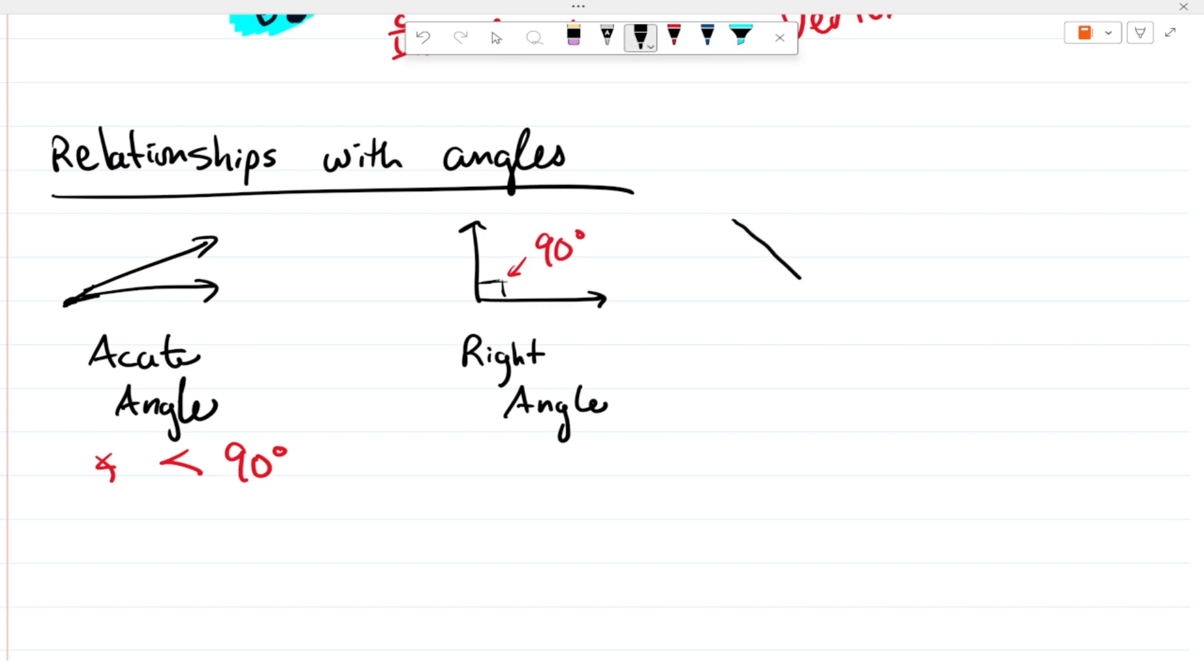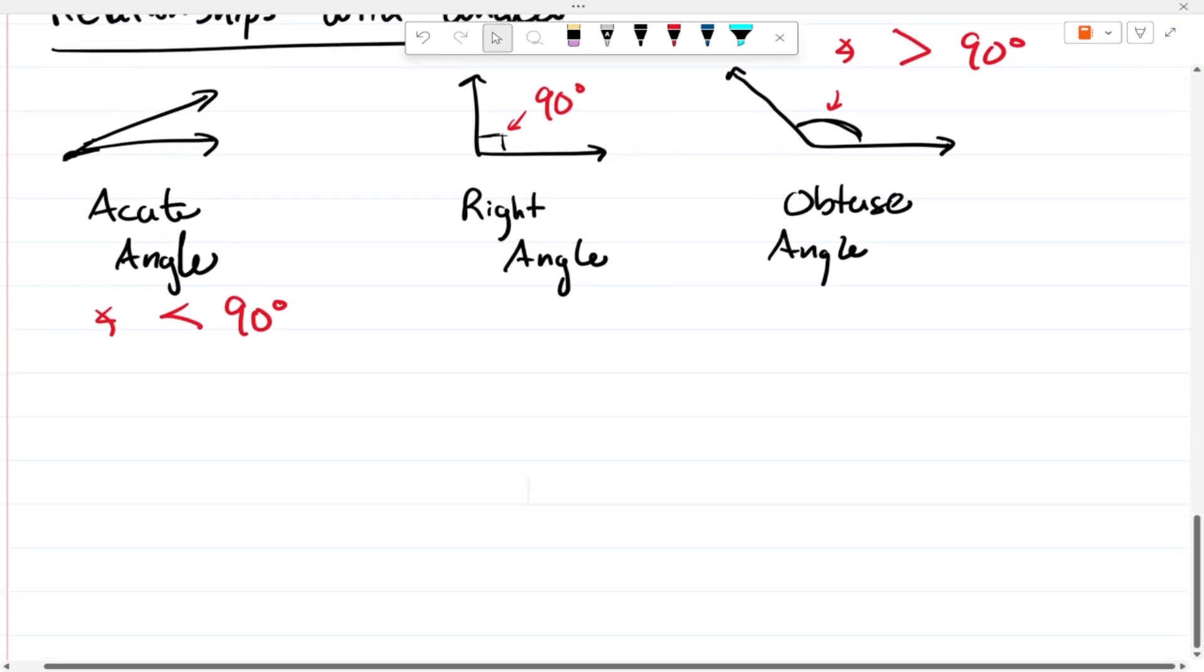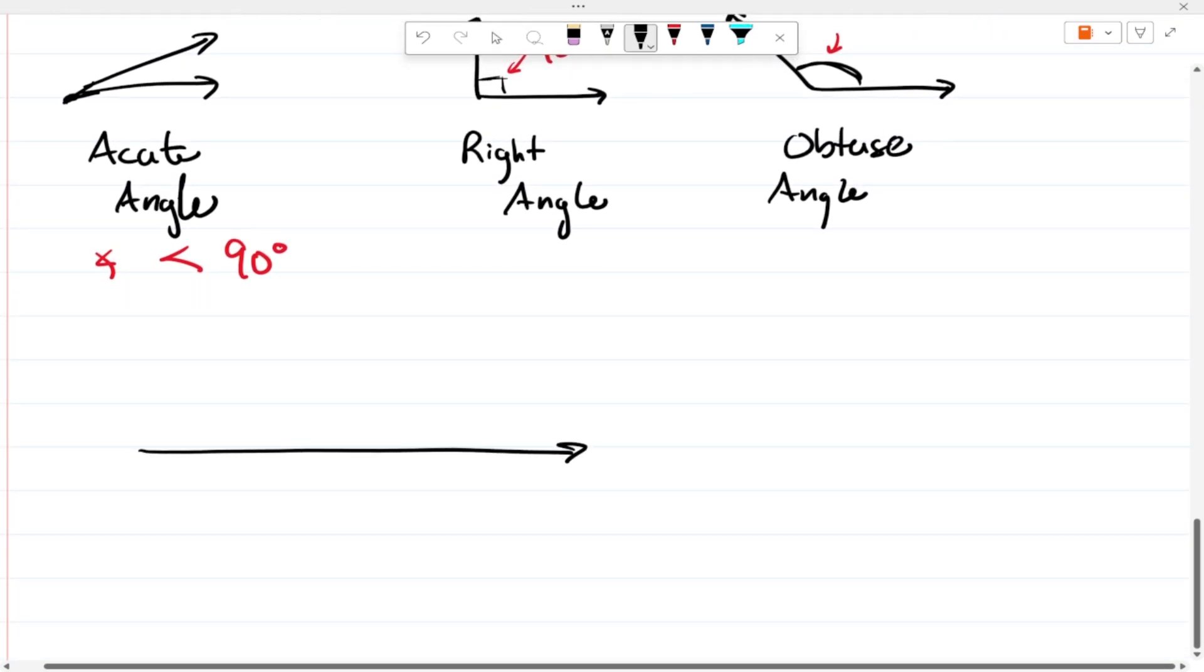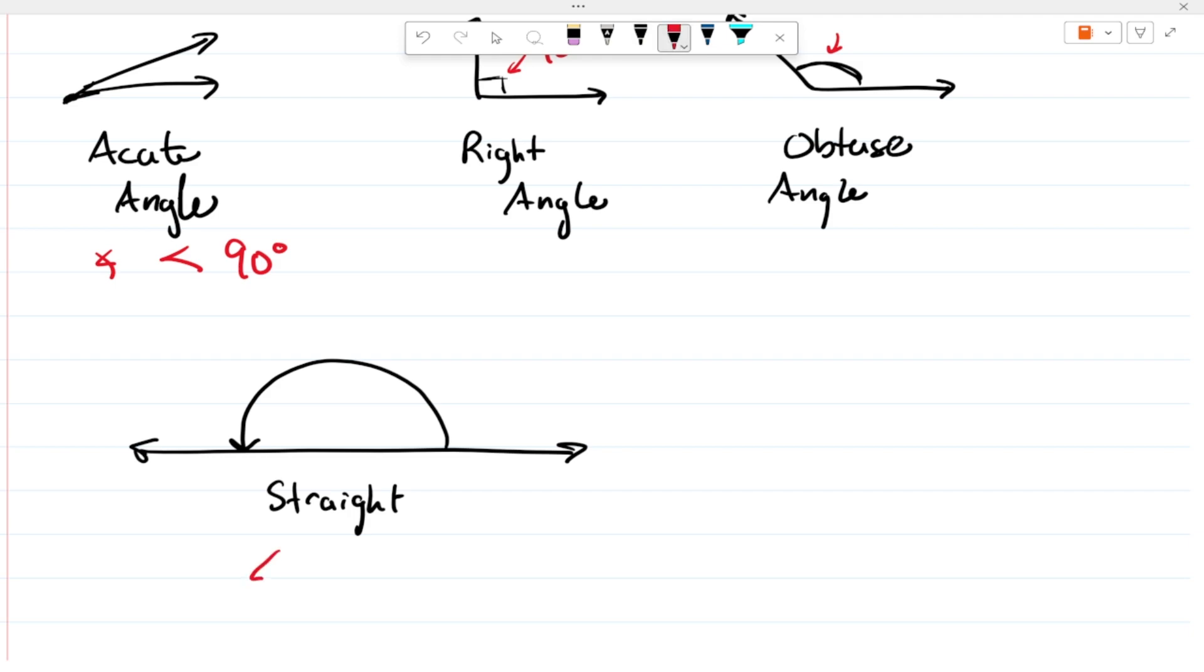Then we have this type of angle, which we would call an obtuse angle. In obtuse angles, the angle is bigger than 90 degrees. And then the last type of angle we have is what we call a straight angle. And that's when the angle equals 180 degrees specifically.